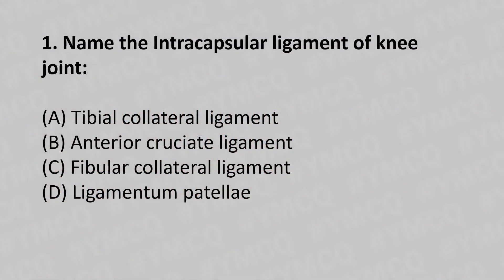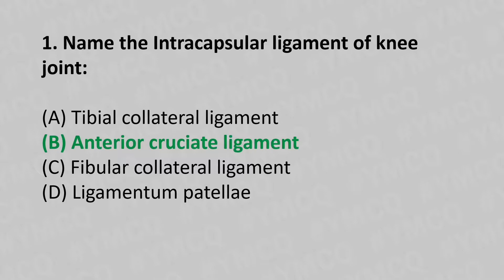Name the intercapsular ligament of the knee joint. Option A, tibial collateral ligament. Option B, anterior cruciate ligament. Option C, fibular collateral ligament. Option D, ligamentum patellae. And the answer is Option B, anterior cruciate ligament.